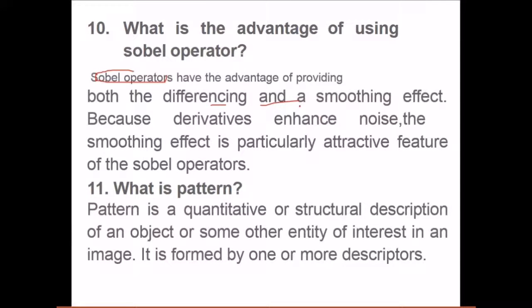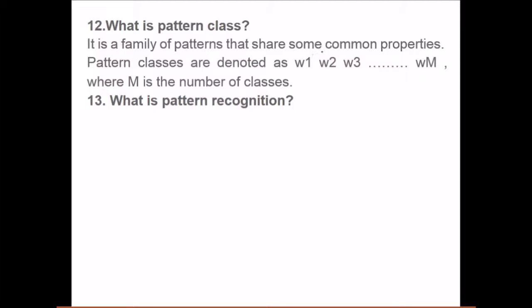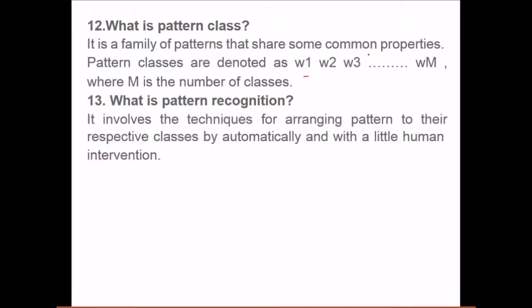What is pattern? Pattern is a quantitative or structural description of an object or some other entity of interest in an image. It is formed by one or more descriptors. What is pattern class? It is a family of patterns that share some common properties. Pattern classes are denoted by w1 to wm, where m is the number of classes. What is pattern recognition? Pattern recognition involves the techniques for arranging patterns to their respective classes, automatically and with little or less human intervention.